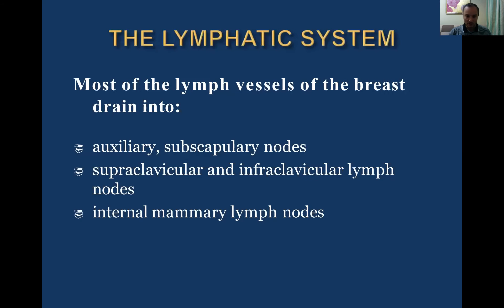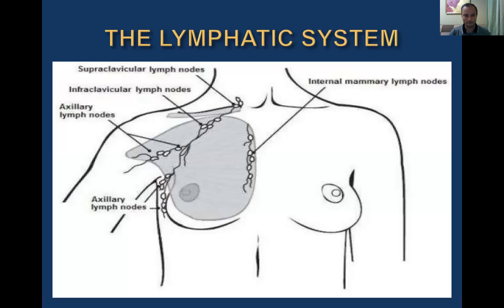Now about lymph drainage of the breasts. Most lymph vessels drain into the axillary subscapular nodes, supraclavicular or infraclavicular lymph nodes, and sometimes, in cases of inner tumor location, into the internal mammary lymph nodes. I'll show you the structure of the lymph nodes and lymph vessels of the breast: the axillary zone, infraclavicular, supraclavicular, and internal mammary or parasternal lymph nodes.